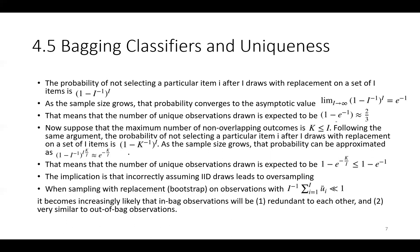Now suppose that the maximum number of non-overlapping outcomes is k less than or equal to I. Following the same argument, the probability of not selecting a particular item i after I draws with replacement on a set of I items is (1 - k/I)^I. As the sample size grows, that probability can be approximated to e^(-k/I). That means that the number of unique observations is decreasing, as seen on this formula.